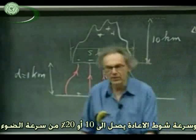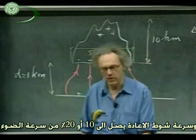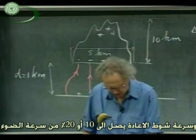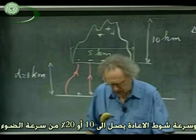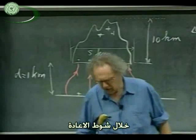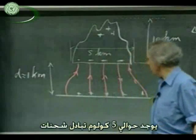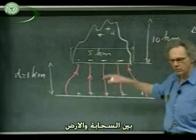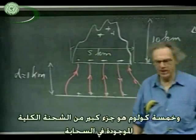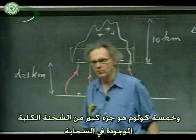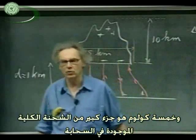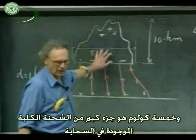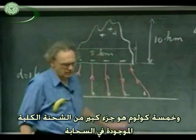The speed of the return stroke is about 10 to 20% of the speed of light. During the return stroke, there is about 5 Coulombs of charge exchanged between the cloud and the earth. And 5 Coulombs is a sizable fraction of the total charge that was on the cloud to start with.